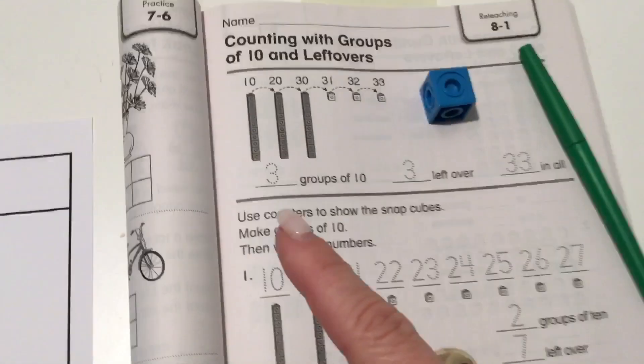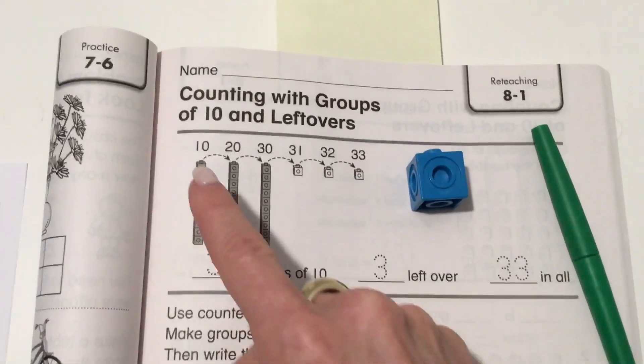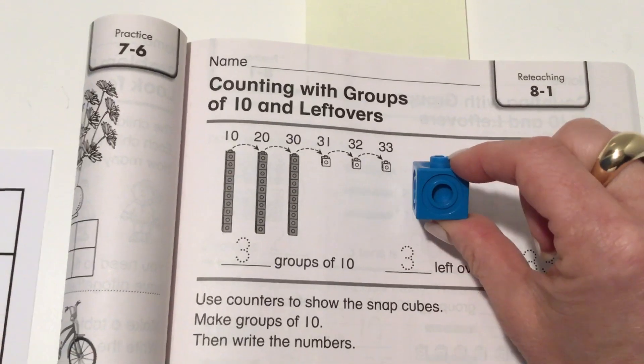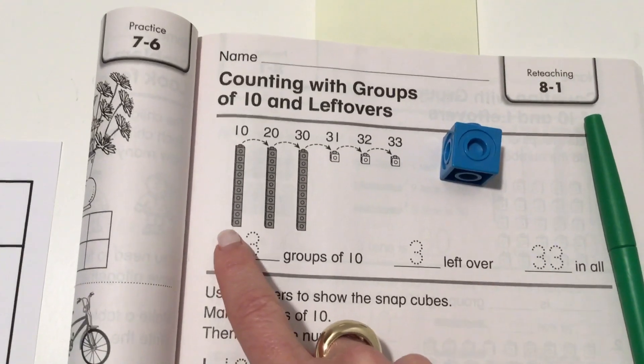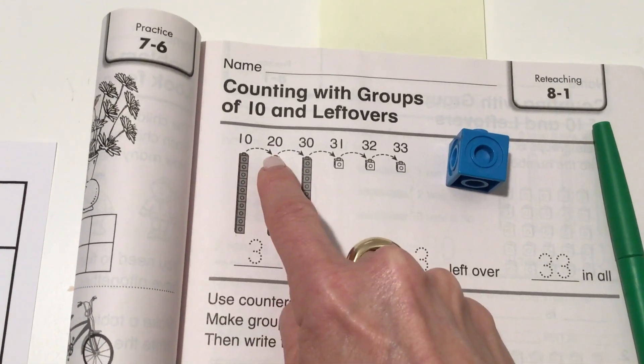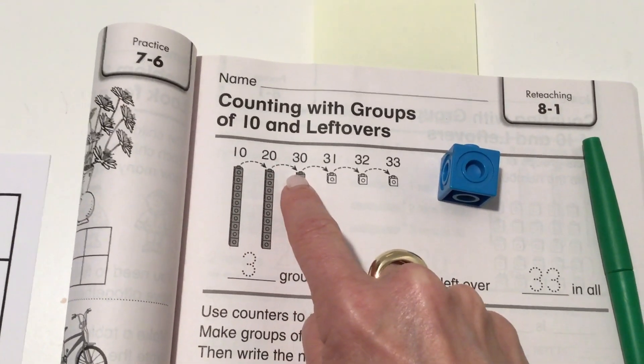You'll be practicing that today and you'll see these groups of 10. They're actually these blocks - 10 of them together and we count them by tens and then ones: 10, 20, 30, and then by ones.